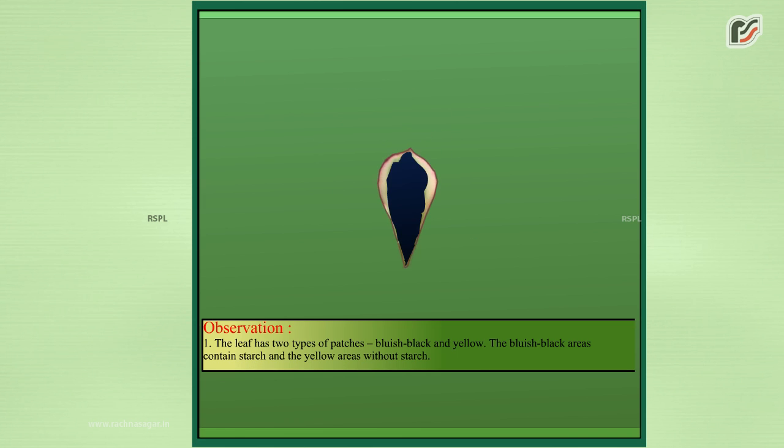Observation: The leaf has two types of patches - bluish black and yellow. The bluish black areas contain starch and the yellow areas without starch.